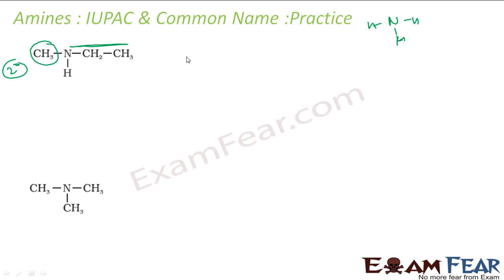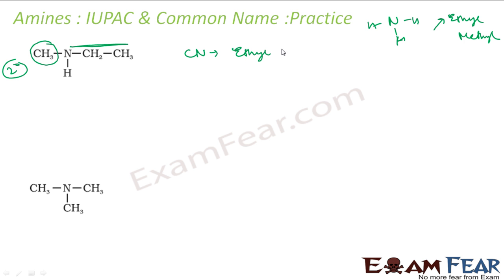Let me write the common name first. This nitrogen has one ethyl and one methyl attached to it. Starting with alphabetical order, E comes first, so it will be ethyl methyl amine. That is the common name.